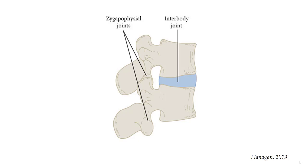The motion at any one functional spinal unit is small. The motion of the spine comes from adding all the small individual movements in that region together. Since the interbody joints are largely the same throughout the spine, regional differences in spinal mobility are attributed to the facet joints, whose orientations are different in the cervical, thoracic, and lumbar regions.